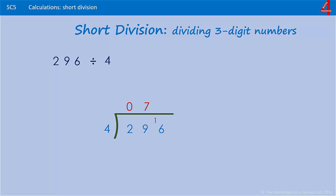Now we're asking how many lots of 4 will go into 16. 4 times 4 is 16, so we can put a 4 up there. 296 divided by 4 is 74. This is one for you to try: 335 divided by 5. Pause the video and have a go.